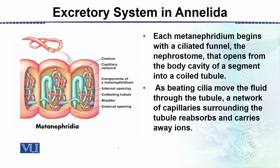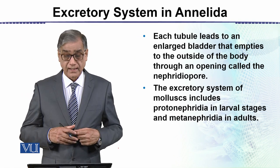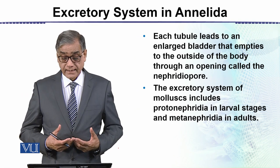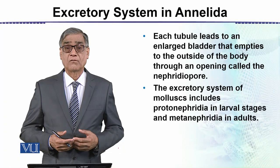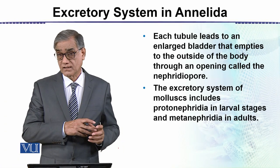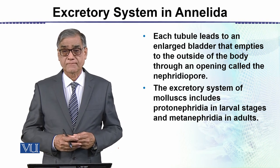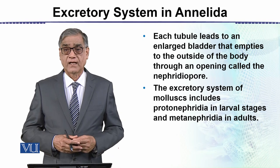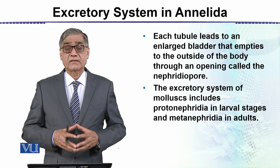The nitrogenous waste is ammonia mixed in water, which is then eliminated. Each tubule leads to an enlarged bladder that empties to the outside of the body through an opening called the nephridiopore. The nephrostome is the ciliated internal opening within the segment, while the nephridiopore is the external opening where water along with nitrogenous waste is eliminated. This is the excretory system in annelids.